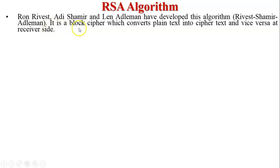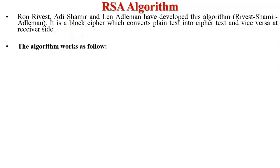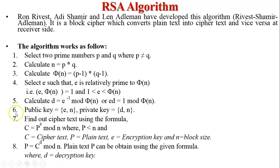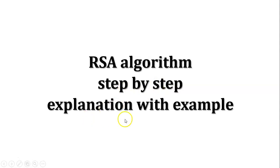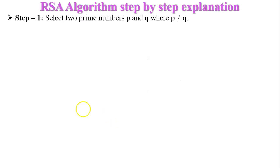The RSA algorithm works on a block cipher which converts plaintext into ciphertext and vice versa at the receiver side. The algorithm works as follows — there are a total of eight steps performed in the algorithm, including encryption and decryption. I will discuss all these steps with an example, step by step.